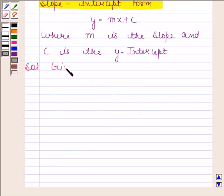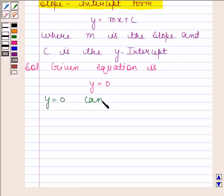The given equation is y equals 0. We have to reduce this equation into slope-intercept form and then we have to find its slope and y-intercept.